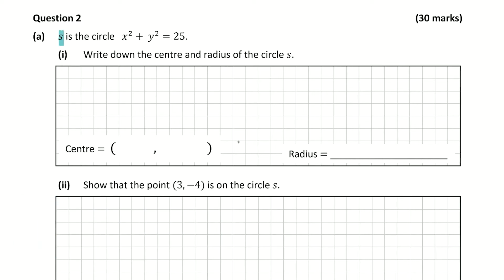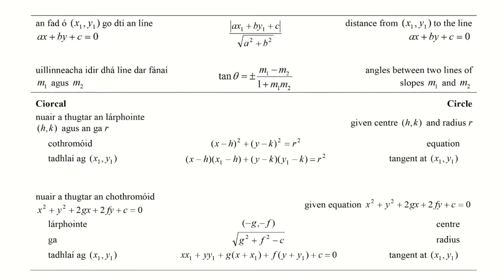We're told that S is the circle x² + y² = 25, and we're asked to write down the center and the radius of circle S. I'm going to go to my log tables on the page with the formulas for the circle. The formula we're given looks like: (x - h)² + (y - k)² = r², which gives the center (h, k) and the radius r.